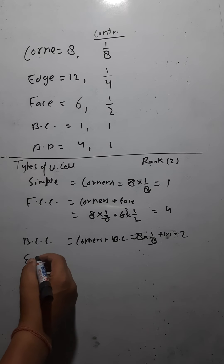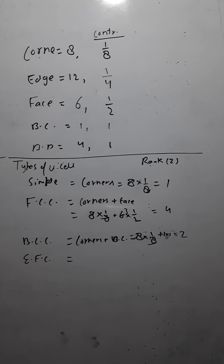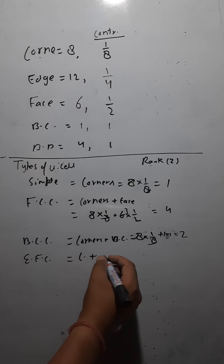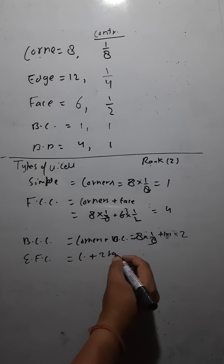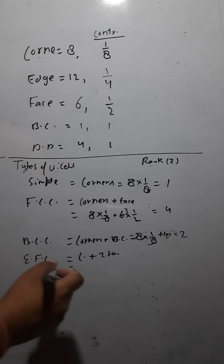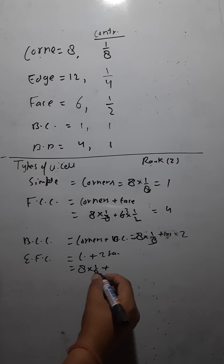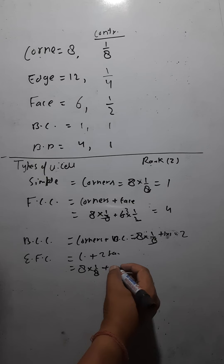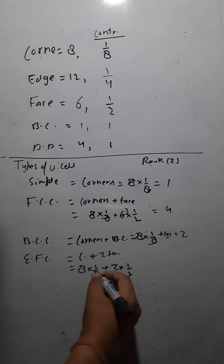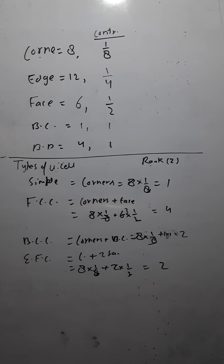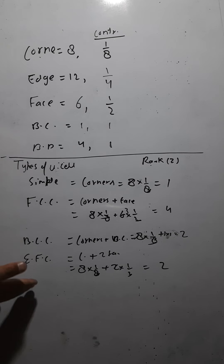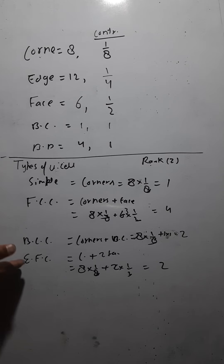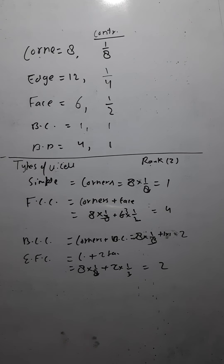For an end-face centered unit cell, particles are at corners plus two opposite faces. 8 corners × (1/8) = 1, and 2 faces × (1/2) = 1. So 1 + 1 = 2. The rank of the end-face centered unit cell is 2.